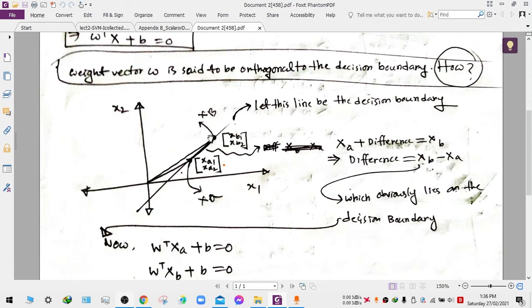If we use the formula of vector addition, we can get this vector, which is XA plus this vector, which is actually the difference between XB and XA. This part is the difference between XB and XA.